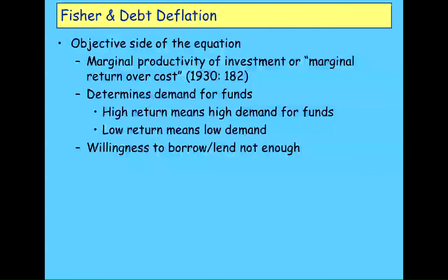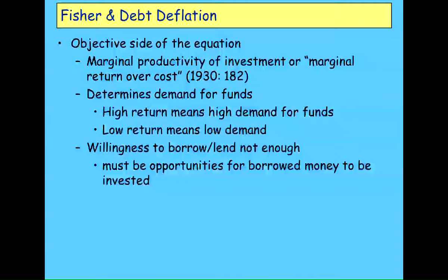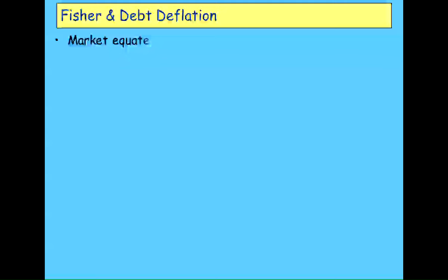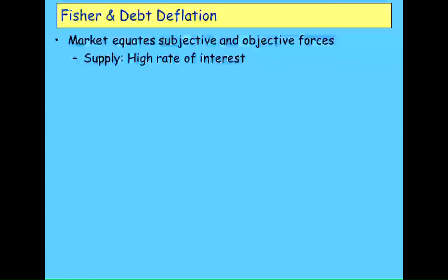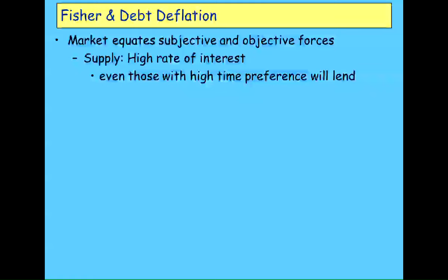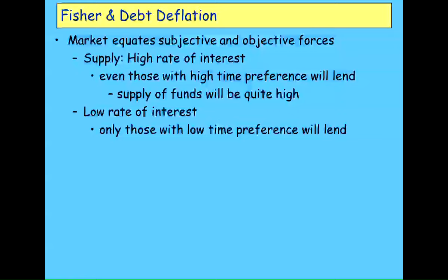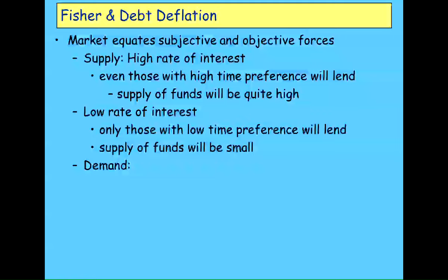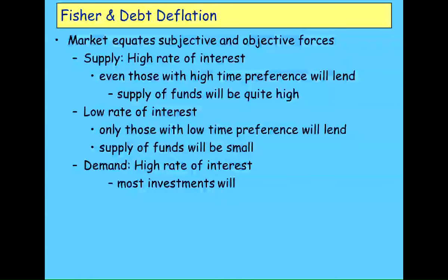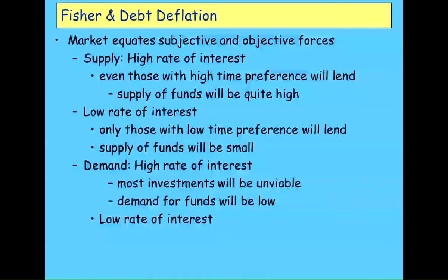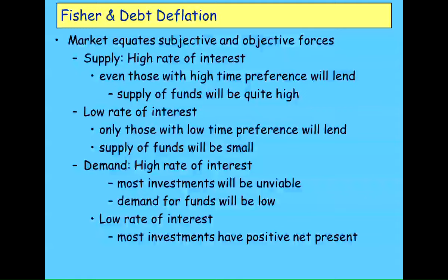So your willingness to borrow or to lend is not enough — you've got to have projects you can invest in that are going to bring a return. The market then brings those two forces together. If there's a high rate of interest, even those with a very high time preference might think, 'I can get 20% on my money, I'll lend it out instead,' so there'll be a high supply of funds. If the rate of interest is quite low, only those with a very low time preference will even consider lending. On the demand side, a high rate of interest means most projects will have an internal rate of return lower than the rate of interest, so there won't be much demand for funds.